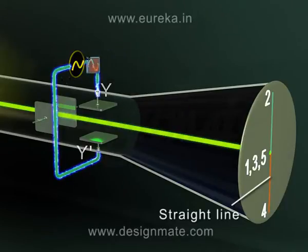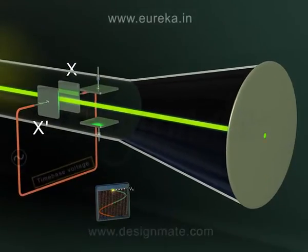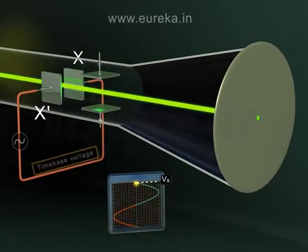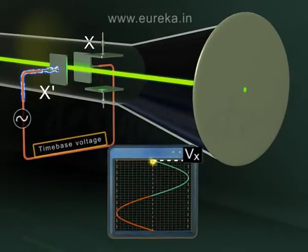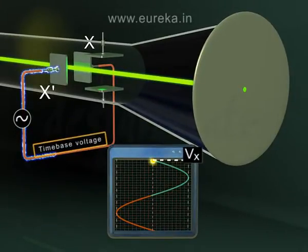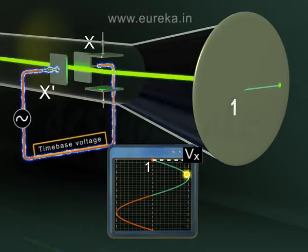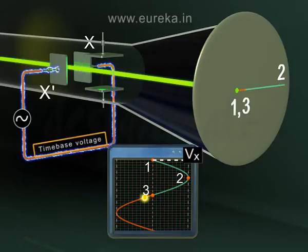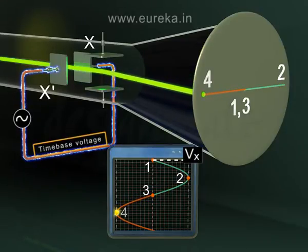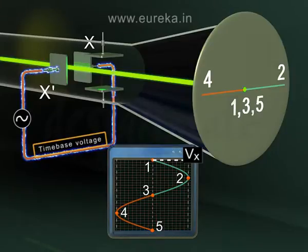Similarly, when a potential difference or AC signal, a time-based voltage, is applied to X-X' plates, it makes the spot move in the horizontal direction. Applying a sinusoidal signal, the spot reaches the end of the screen and again flies back to the starting point, tracing out a straight line on the screen.